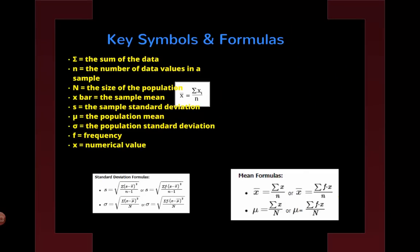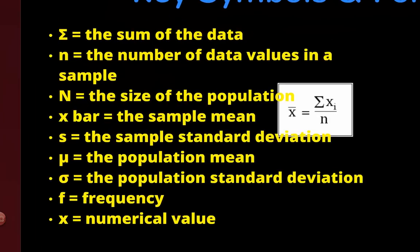There are some key symbols we're going to need to look at. Capital Sigma means summing — we're going to sum the data. Little n is the number of values in a sample, whereas capital N is the size of a population.